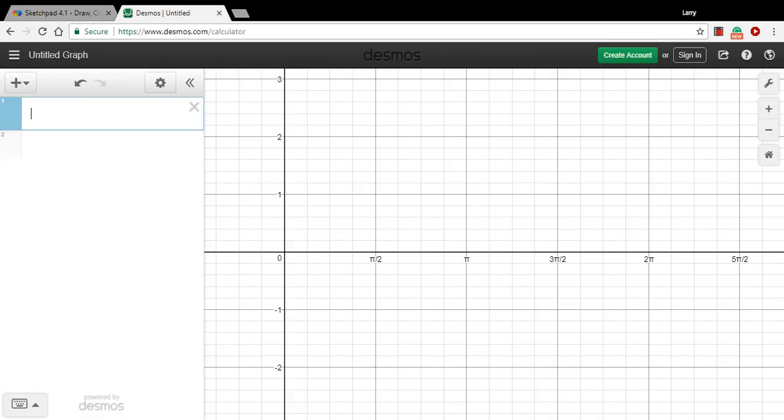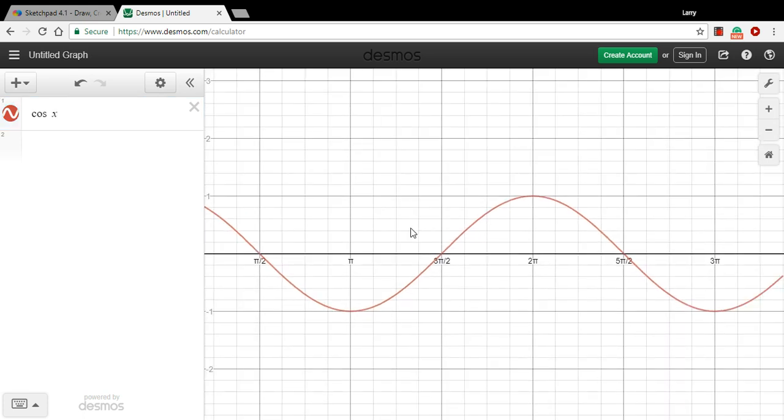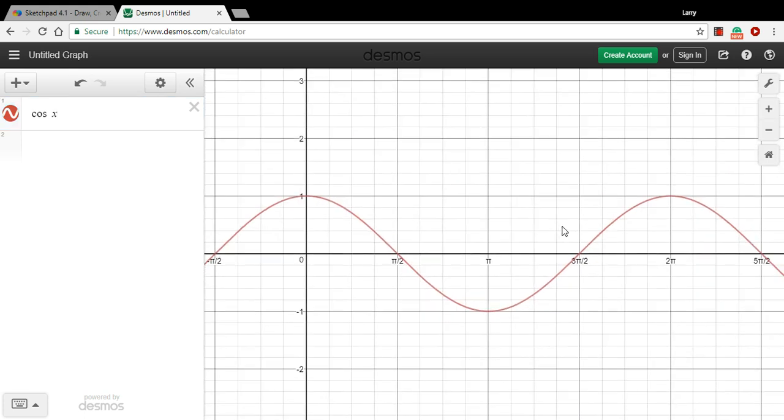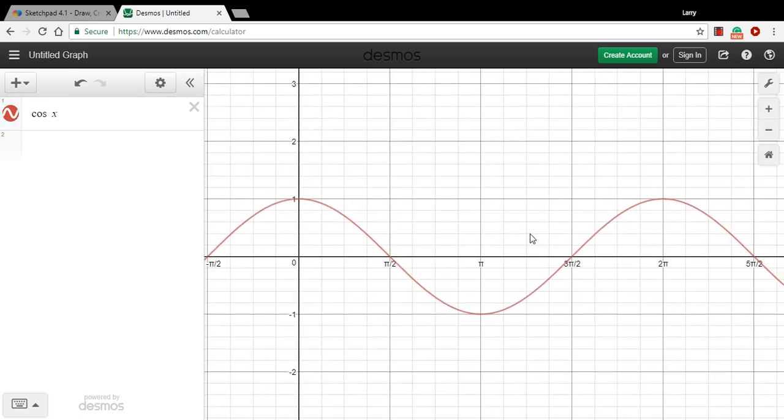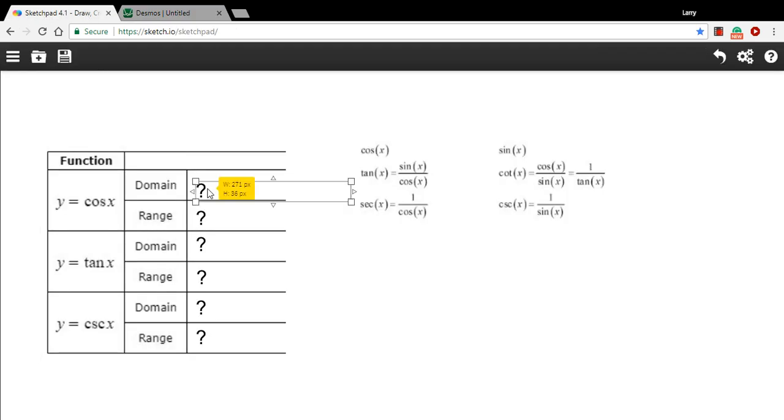So let's start with this cosine. So there's the cosine function. And in terms of the domain, which is all the x values, you can see it stretches on forever. We could keep moving left or right, and it would continue on forever. So it's going to cover all of those x values. So we could say that the domain for the cosine of x is all real numbers.